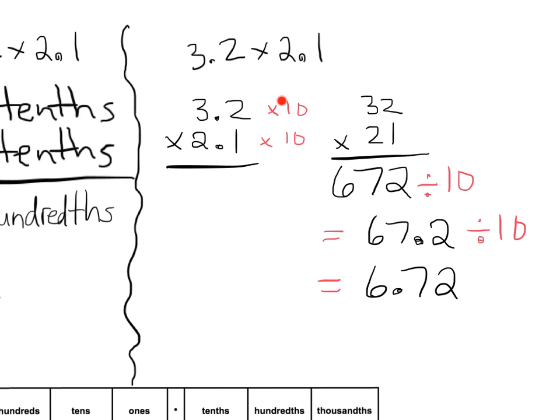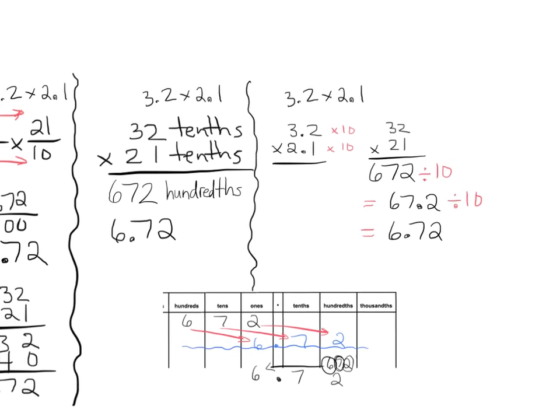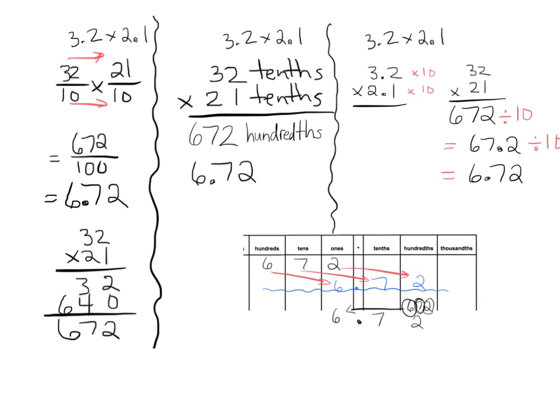So we multiplied by 10 to turn this 3.2 into a whole number. We multiplied by 10 to turn 2.1 into a whole number, and then we multiplied. But because we multiplied, now we need to fix our answer by dividing. Divide by 10, divide by 10, and that gives us 6.72, or 6 and 72 hundredths. And so there we have it. We have three different ways to show that the answer is, in all three cases, 6.72.